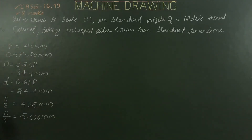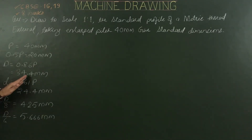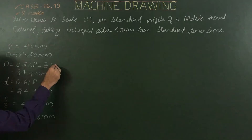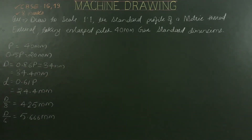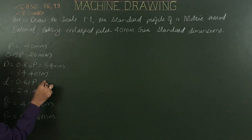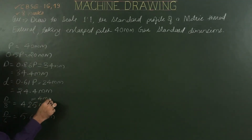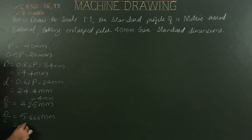The final values are: pitch 40mm, half of pitch 20mm, then capital D is 34.4mm. However, for construction work this value is not acceptable, so we will take 34mm. Next, small d is 24.4mm, so we take 24mm. Similarly, D by 8 is 4.25mm, so we take 4mm for construction, and instead of 5.66mm we take 6mm for D by 6.